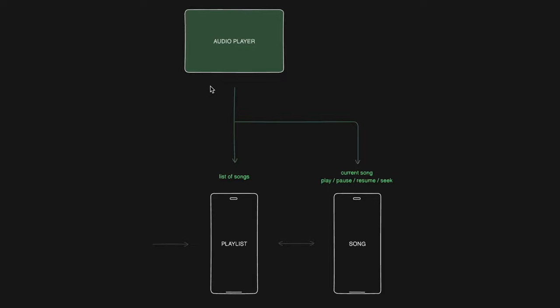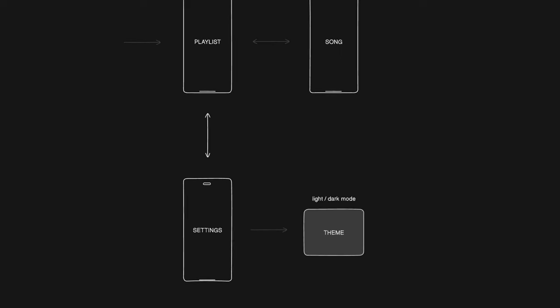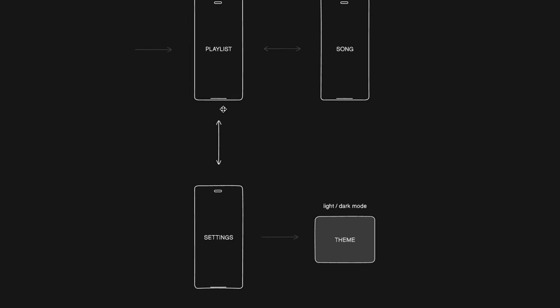We're going to have the audio player as a provider to provide all the different data we need. For the first page it's just going to provide a list of songs, and when we go to the song page it's going to provide the current song that we're playing and the playback controls. We're also going to have one more page for the settings page where we can control dark mode and light mode.